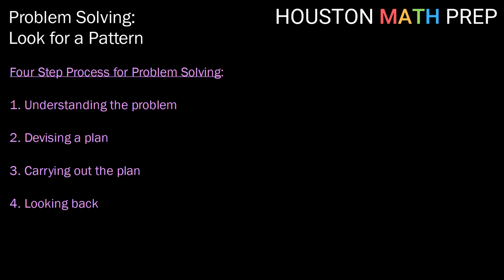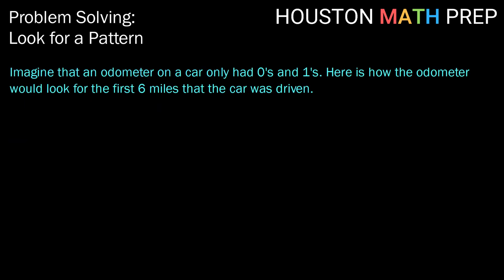All right, with that review in, let's go ahead and jump into our first example. So imagine that an odometer on a car has only zeros and ones. Here's how that odometer would look for the first six miles that the car is driven.